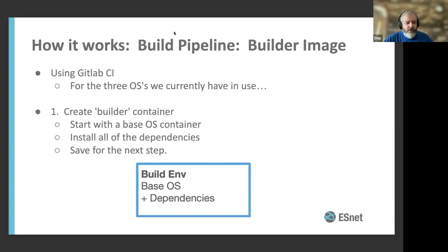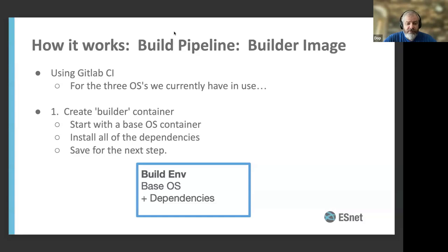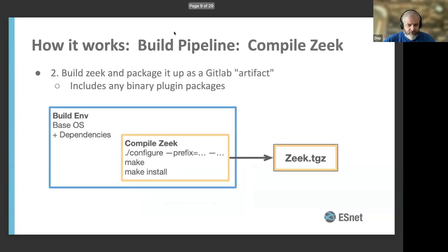So how does this work? We use GitLab CI. We have an internal GitLab system that clones the Zeek repo from GitHub. We have Zeek deployed on three different OSes: Ubuntu 20, Ubuntu 22, and Rocky Linux 8. The first thing that happens is we create a builder container — just a base OS container with all the dependencies needed to build Zeek, which is quite a bit more than just running it. We save that container for the next step, which does the heavy lifting: downloading Zeek into the build environment and doing all the compiling with the configure parameters we need.